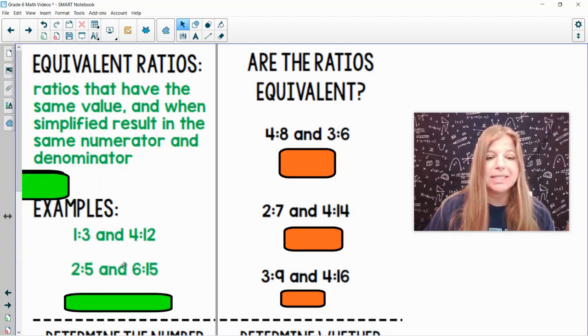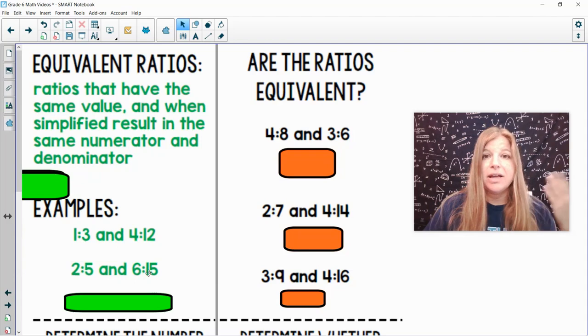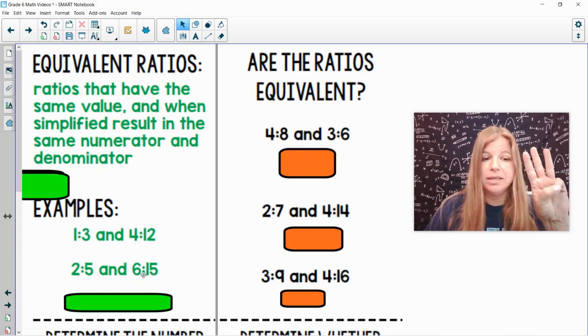Another one, 2 fifths and 6 fifteenths. The other way to think about it, are they equivalent, is if I take 6 to 15 and I divide them both by 3, 6 divided by 3 is 2, 15 divided by 3 is 5. They match up perfectly.